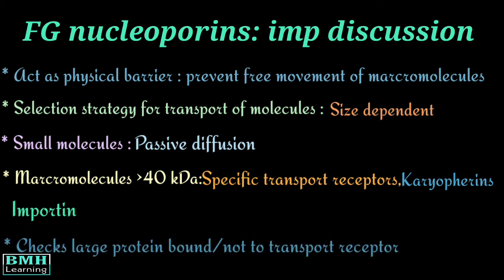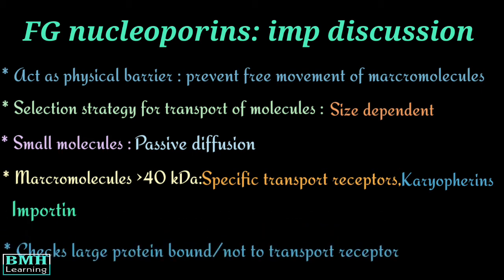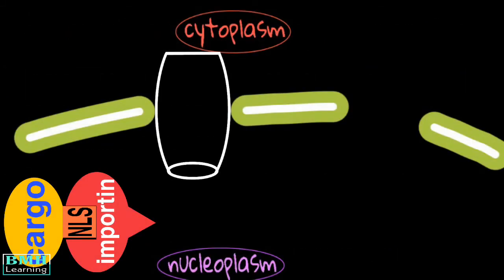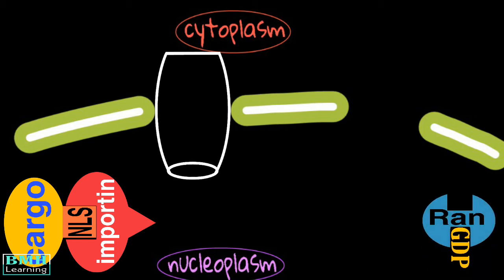It checks whether the large protein is bound to its receptor or not. As soon as the cargo importin complex reaches the nucleoplasm, another protein joins the process. This protein is named as RAN.